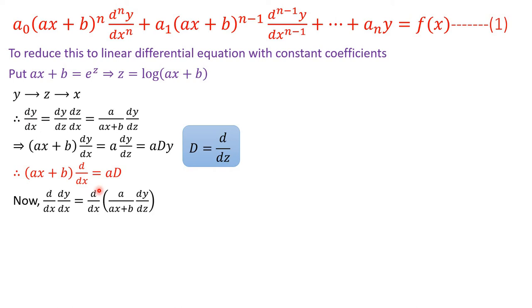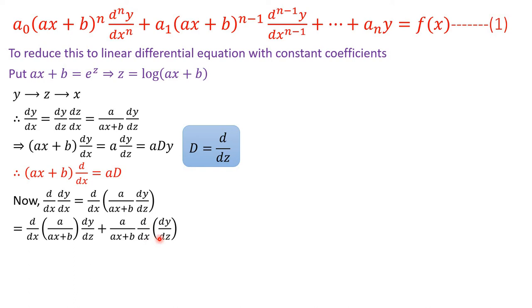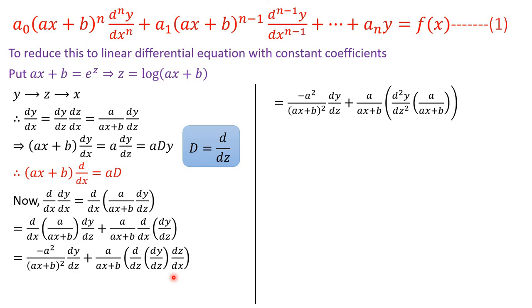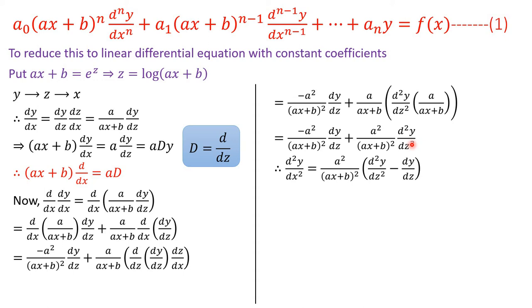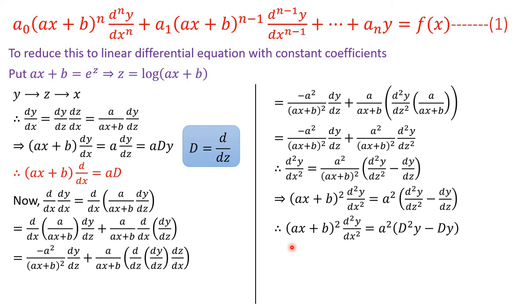Now let us differentiate dy/dx again with respect to x. We get d/dx of (a/(ax+b))·(dy/dz). Applying the product rule and then the chain rule for the derivative of dy/dz with respect to x, and after simplifying, we get: −a²/(ax+b)²·(dy/dz) + a²/(ax+b)²·(d²y/dz²). This gives us (ax+b)²·(d²y/dx²) = a²·[D²y − Dy], which can be written as a²·D(D−1)·y.